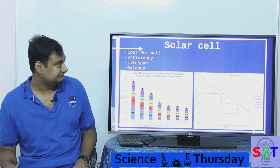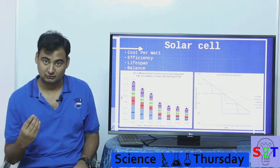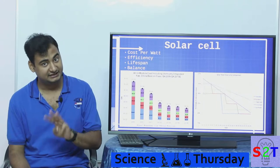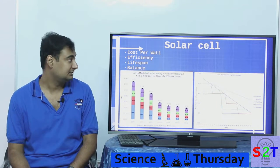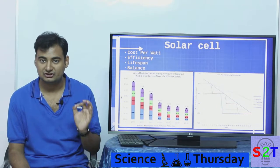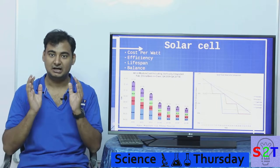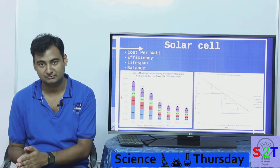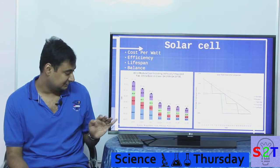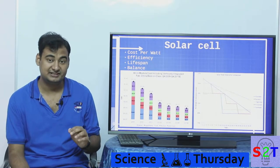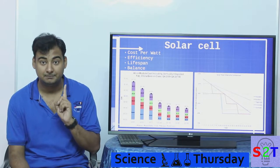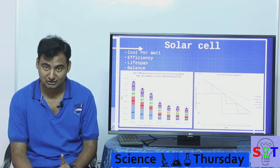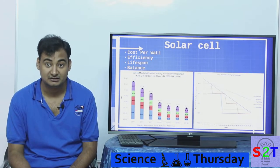The first thing to understand about solar cells — the core element — is that there are three factors you have to balance. The first is cost per watt: how much money you spend to get one watt of power. It used to be very high — earlier it was 70 to 80 dollars per watt, meaning if you wanted a solar panel giving you one watt, you might be spending close to a hundred dollars.